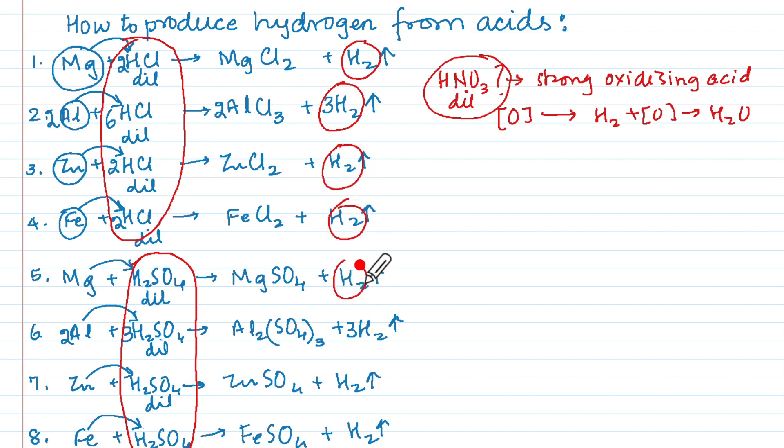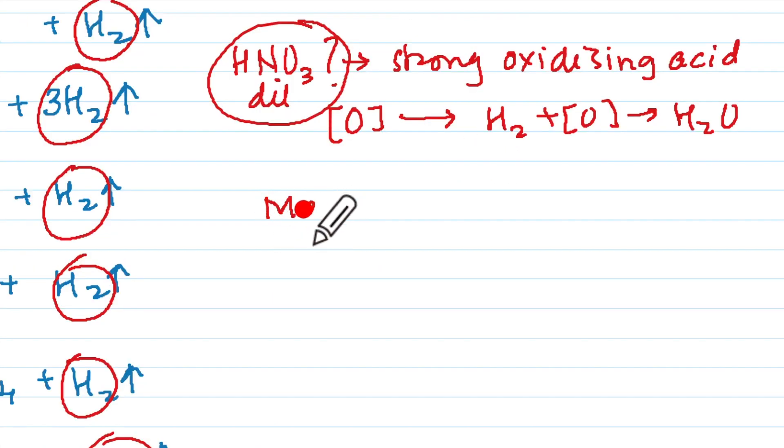Everywhere we were able to obtain hydrogen with active metals and hydrochloric acid or sulfuric acid. So which are the two metals which will react with HNO3 to liberate hydrogen and that is Mg and Mn.